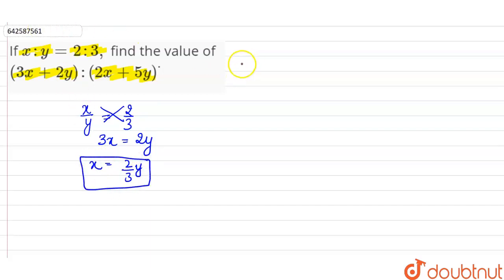In this question, we have to find the value of 3x plus 2y is to 2x plus 5y. Here, what we can do is we can substitute the value of x.